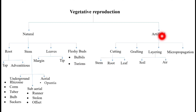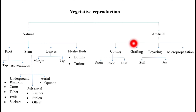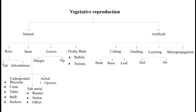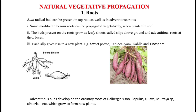In artificial vegetative reproduction, we will see four methods: cutting, grafting, layering, and micropropagation. Micropropagation is called the tissue culture technique. So we will study all of these in detail, one by one.